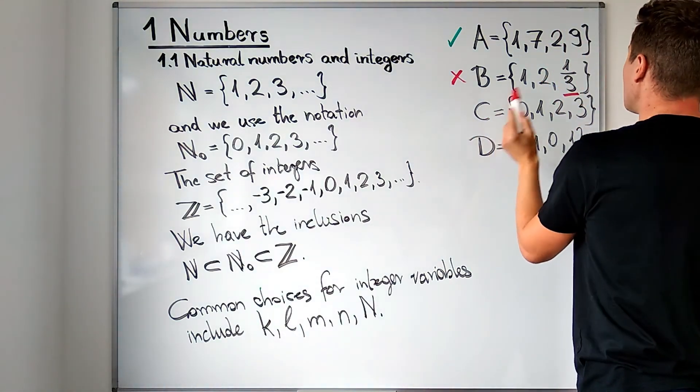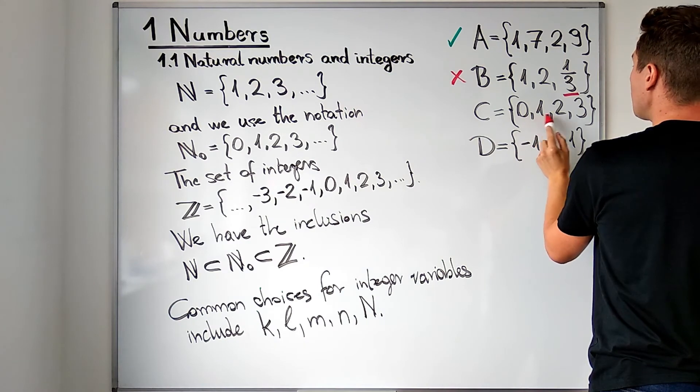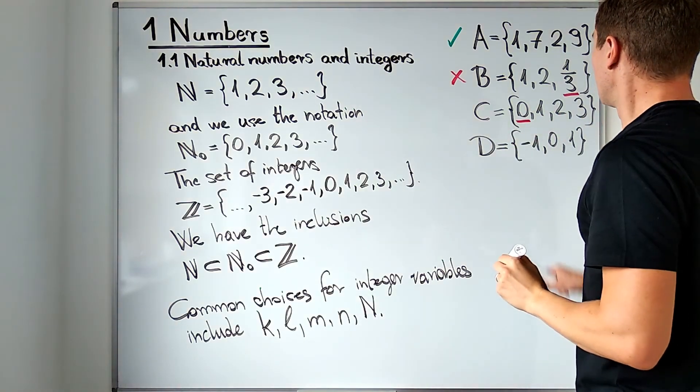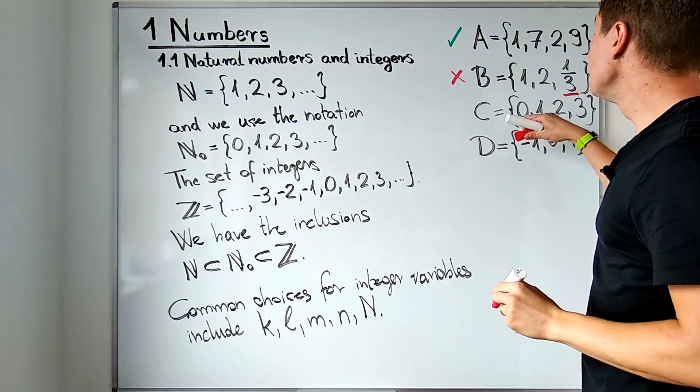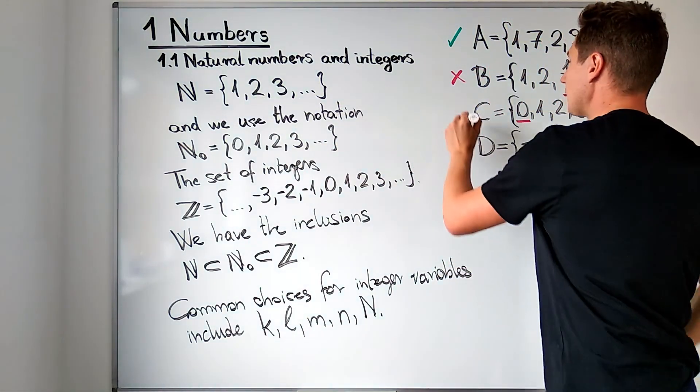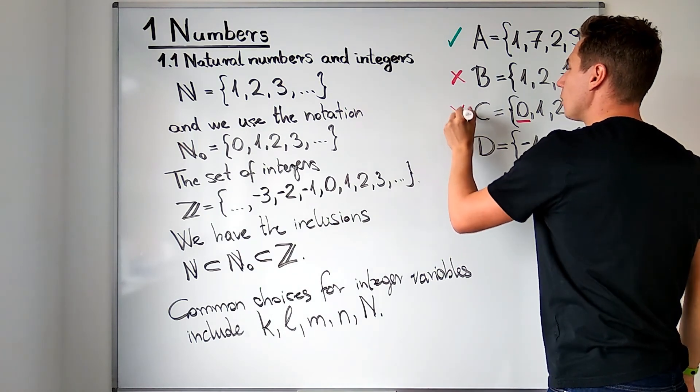Set C has natural numbers 1, 2 and 3 in it but it also has 0 as an element. So it means that we did not consider 0 to be a natural number. So that means that C, this one, is also a no.